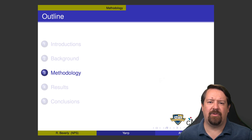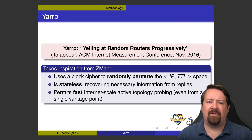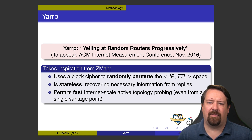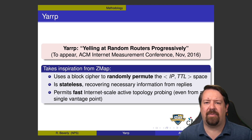So how does the YARP tool address those constraints? YARP stands for Yelling At Random Routers Progressively and first came out a few years ago. The key here is that it randomly permutes the IP and TTL space. Instead of progressively probing increasing TTLs to one IP address, it sends a probe to one IP address at one TTL and a probe to a completely different IP address at another TTL. In this way, it avoids concentrating load on particular paths by spreading the probes across all of the paths in the internet.